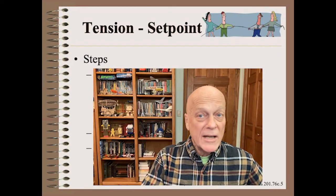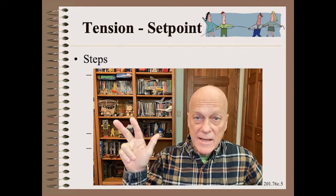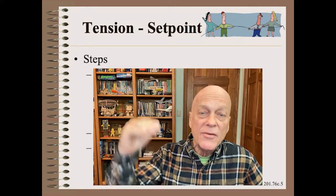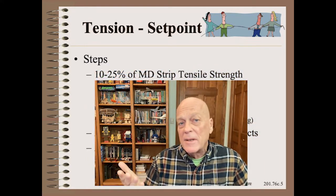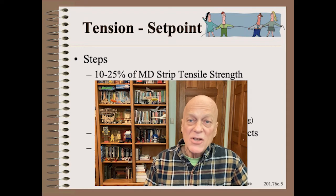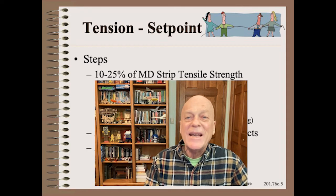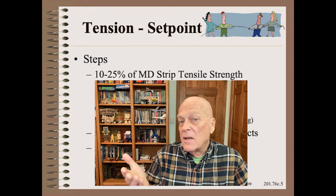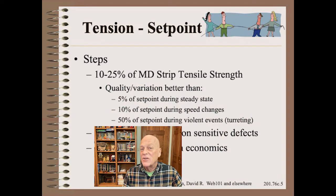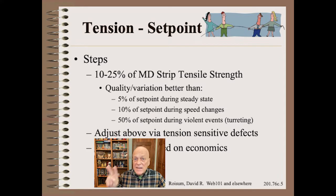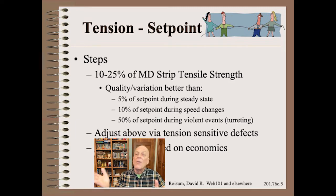Determining the best web tension for any web and drive zone is a process of three steps, each giving progressively better answers, but with additional effort required at each new step. The first step is the simplest and usually good enough to design machines — most webs like to run in a range of 10 to 25 percent of their MD strip tensile strength. To this, all we do is add quality statements such as holding tension to 5 percent of set point during steady state and a bit more during special challenges such as speed ramps. The second step is to adjust the tensions within that range to best avoid either high or low tension defects.